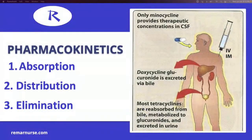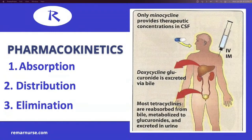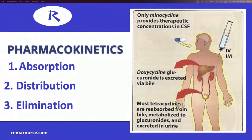When you give a medication, you want to know the pharmacokinetics — essentially how it's absorbed by the body, how it is distributed, and how it is eliminated. There are many types of tetracyclines. For example, minocycline is used because it is going to be very therapeutic in the cerebrospinal fluid. That means tetracyclines can be used to treat things like meningitis.